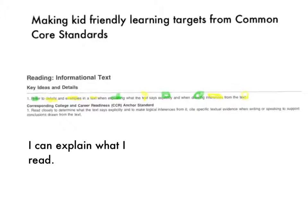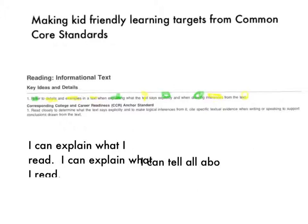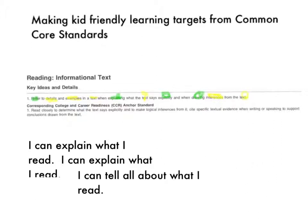There are other ways. We could go one step further and take 'I can explain what I read' and break it down just a little bit more. If the kids aren't 100% sure what 'explain' means, another way to say explain is 'to tell all about.' So let's break it down in even simpler language: 'I can tell all about what I read' would be another way to say the same thing about this particular learning target.